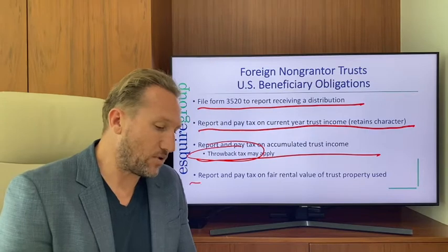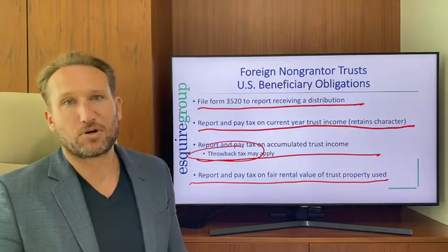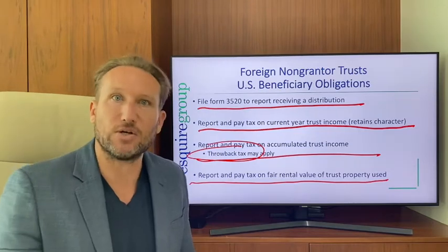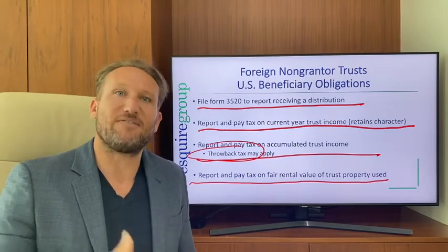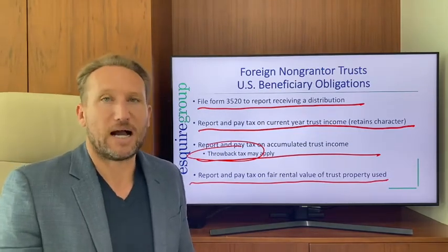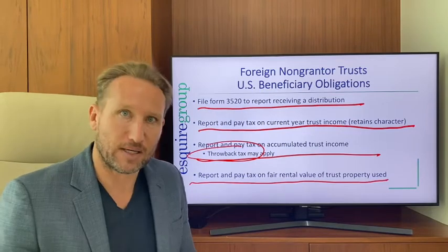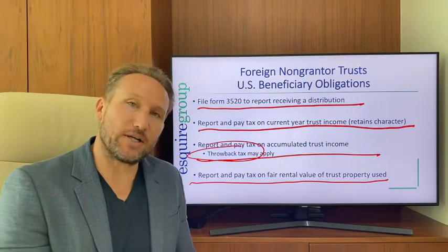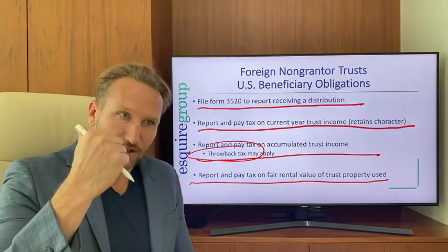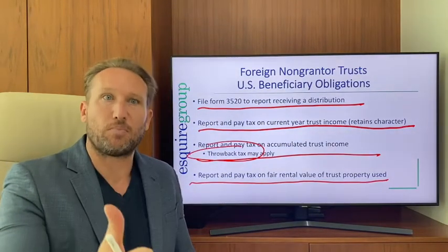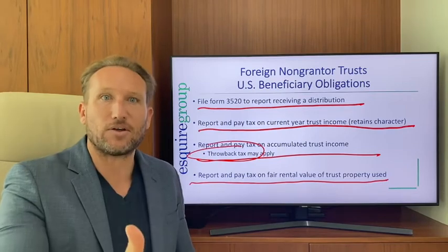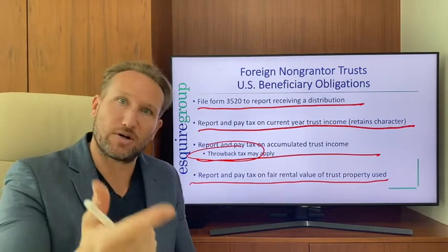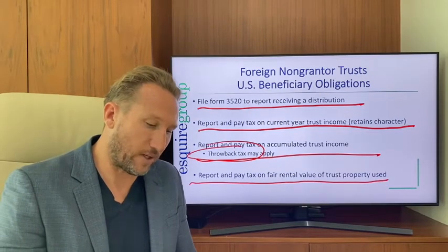Something that happens quite a bit: if the trust owns a house and lets the beneficiary use it, you can't do that tax-free. The fair rental price of using that property needs to be included as income. Basically, the beneficiary must report the value of any trust property used as income and file Form 3520.